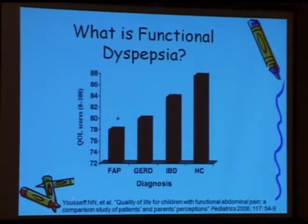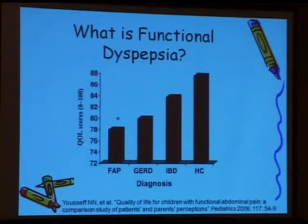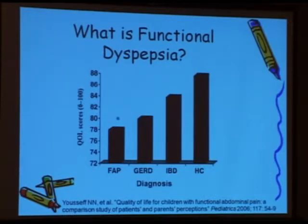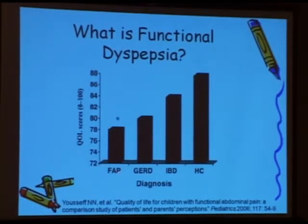An interesting study by Dr. Youssef in 2006 looked at the quality of life of children with different diagnoses. On the y-axis are quality of life scores ranging from 0 to 100 — the higher the score, the better. On the x-axis are different diagnoses: healthy children, those with inflammatory bowel disease such as Crohn's disease, children with GERD — gastroesophageal reflux — and functional abdominal pain, which is where functional dyspepsia falls. Children with functional abdominal pain have worse quality of life compared to all of these other diagnoses.